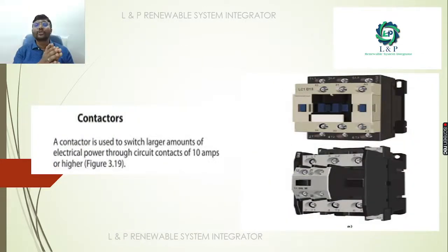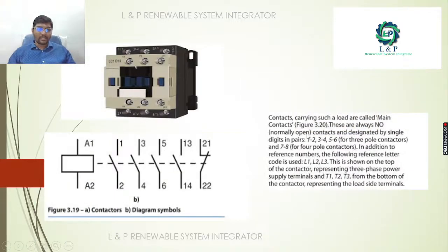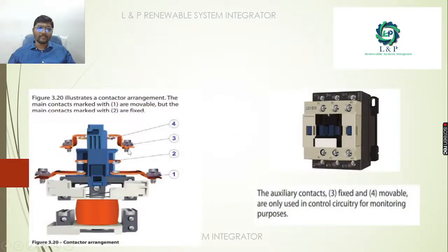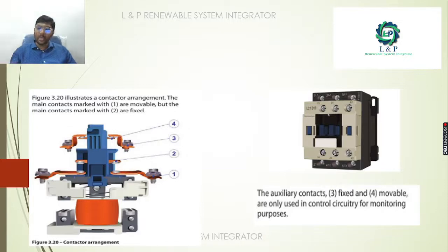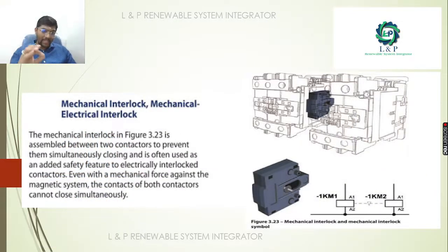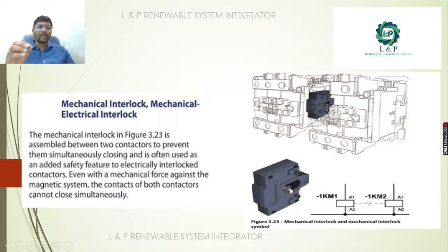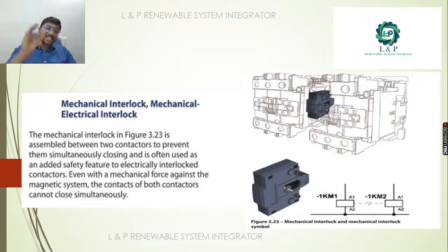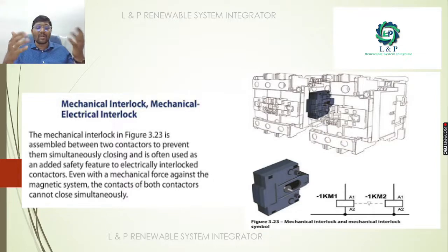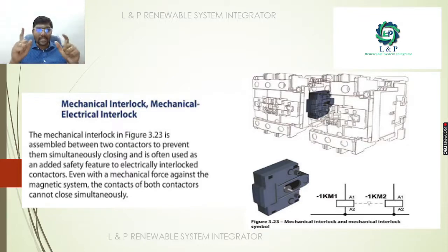A contactor is used to switch larger amounts of electric power — typically 10 amps or higher. This is a real-time photo and the contactor symbol. The auxiliary contactor has fixed and movable parts and is mostly used for controlling circuitry and monitoring. A mechanical interlock assembled between two contactors prevents them from simultaneously closing, and is used as an additional safety feature to electrically interlock contactors — for instance, to prevent two contactors that should not operate simultaneously from doing so due to any false or reverse signal.